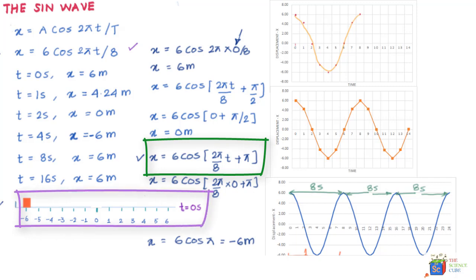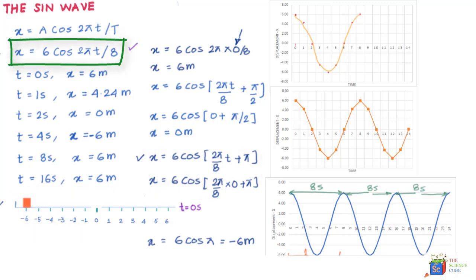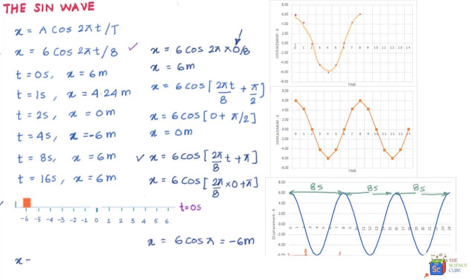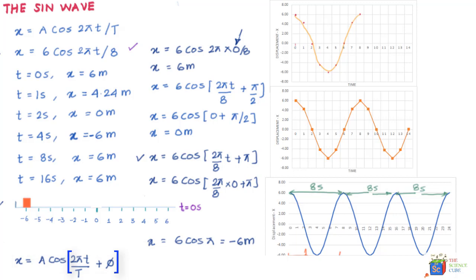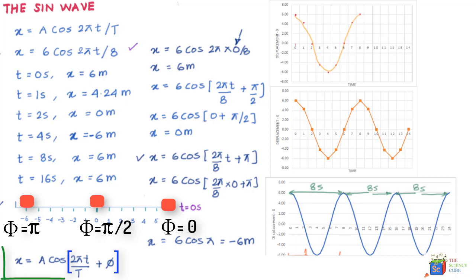We can now write a general form of the equation: X = A cos(2πt/T + φ), where φ is the phase angle. When the mass started from the extreme right, φ = 0. When it started from the middle, φ = π/2. When it started from the extreme left, φ = π. The phase angle φ tells us what phase of the journey the mass is in when it starts — or equivalently, given the phase angle, we can determine the initial position of the mass.